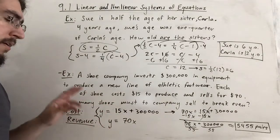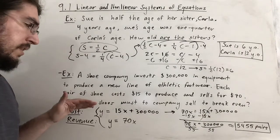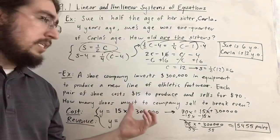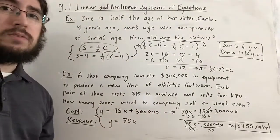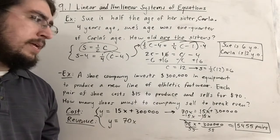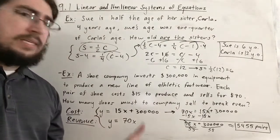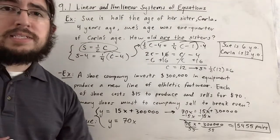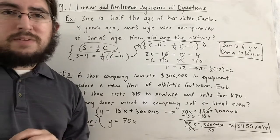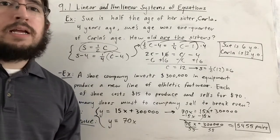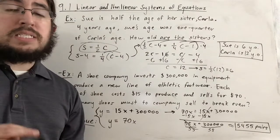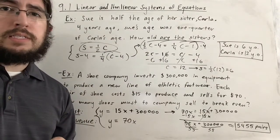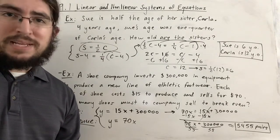At that break-even point, the amount you spend to make the shoes — including equipment upfront cost — equals the amount you make selling them at $70 a pair. That's all I want to say on the application side. This concludes chapter 9.1. In the next video for 9.2, we'll discuss a different method of solving systems of equations, focusing on linear equations only. Thanks for watching.